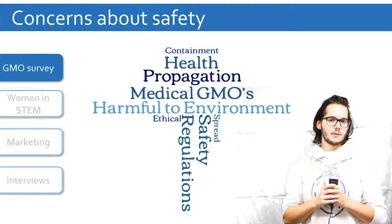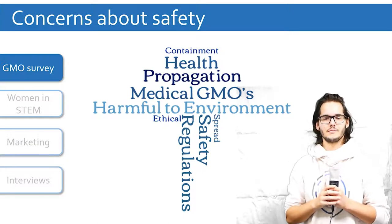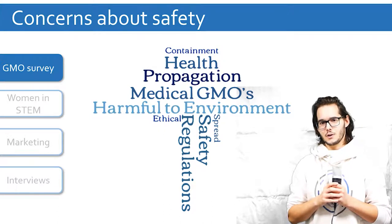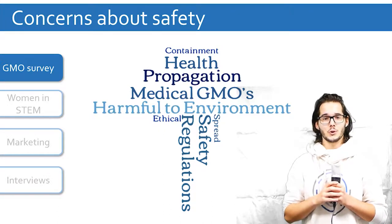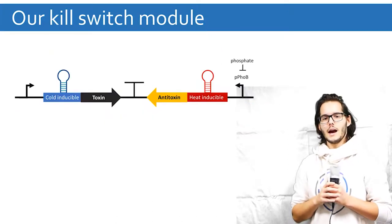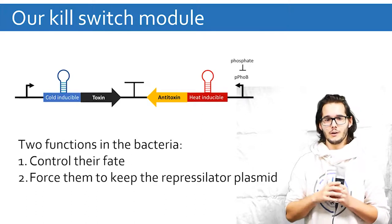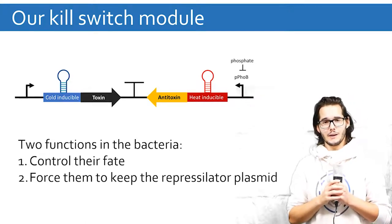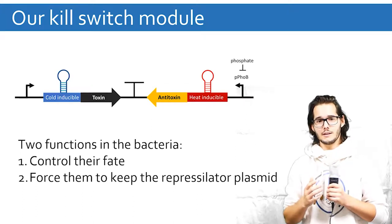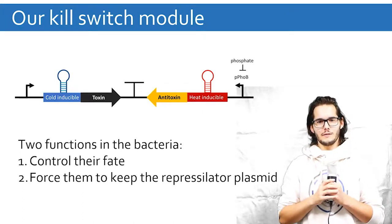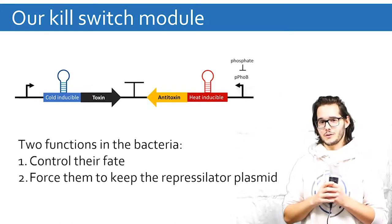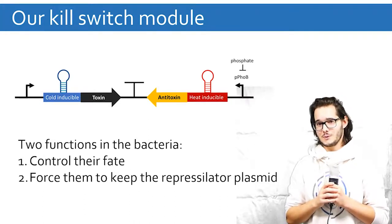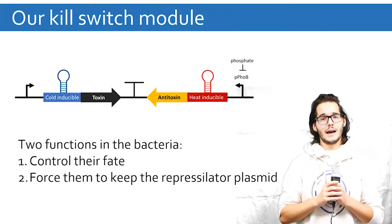That's why we decided to talk with experts and came up with an idea for a so-called kill switch. Our kill switch protects the health of the patient and the environment and it does so by sensing temperature and phosphate. To understand why, let me show you how our kill switch works. Our kill switch has a constantly produced toxin whose production increases when it's cold thanks to a cold-inducible RNA thermosensor. It also has the corresponding antitoxin whose expression can be decreased by phosphate and low temperatures thanks to a phosphate-repressible promoter and a heat-inducible RNA thermosensor. This allows us to control for the fate of the bacteria and it also allows us to force them to keep the repressilator plasmid so that we don't have to rely on antibiotic resistance genes.